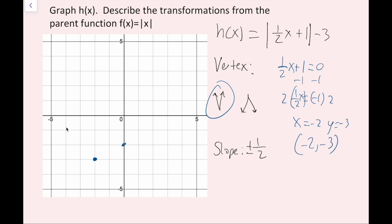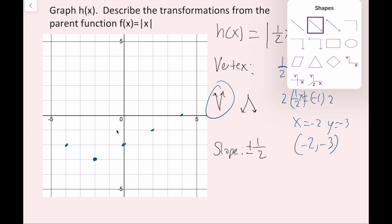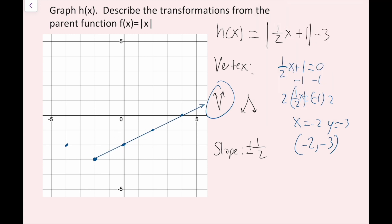Now I need to describe the transformations from the parent function. You could do it the normal way the function looks, doing horizontal translations first, checking for reflections in the y-axis, horizontal stretches or shrinks, reflections in the x-axis, vertical stretches or shrinks, and finally vertical translations.